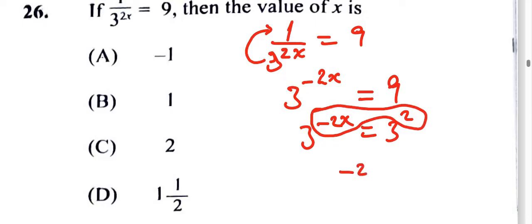So that's negative 2x is equal to 2. It's equal to 2, and then we can divide both sides by negative 2. And so x will be equal to negative 1. So the answer is negative 1.